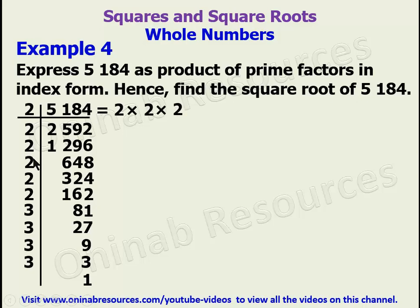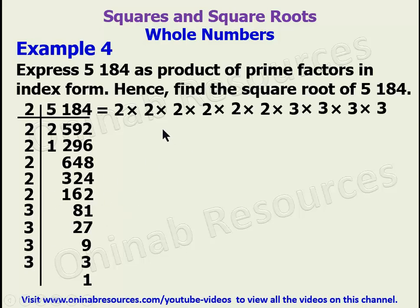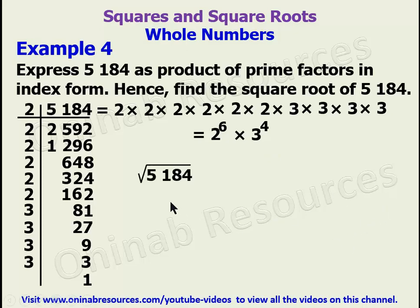So 5184 equals 2 times 2 times 2 times 2 times 2 times 2, multiplied by 3 times 3 times 3 times 3. Writing this in index form: there are six 2s, giving 2 to the power of 6, and four 3s, giving 3 to the power of 4. To find the square root of 5184, we divide each power by 2: 2 to the power of 6 becomes 2 to the power of 3 (which is 8), and 3 to the power of 4 becomes 3 to the power of 2 (which is 9). Eight times 9 gives 72, so the square root of 5184 is 72.